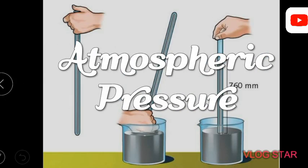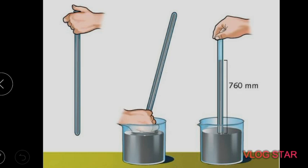Hello students, today I am going to explain atmospheric pressure — how it is measured and who was the first person to realize it can be measured. Torricelli was the first person to measure atmospheric pressure, or air pressure, with the help of some instruments.